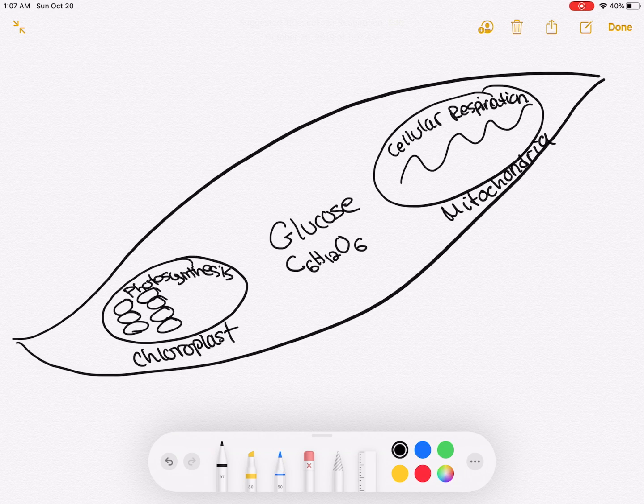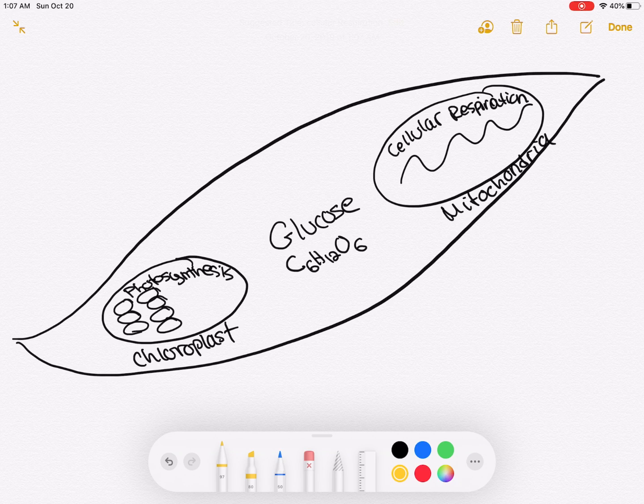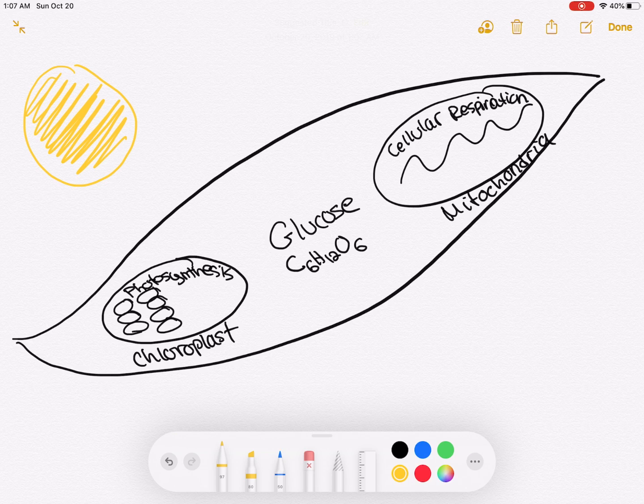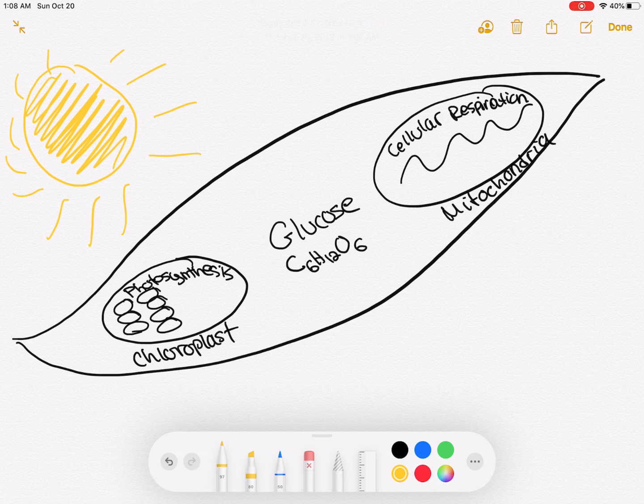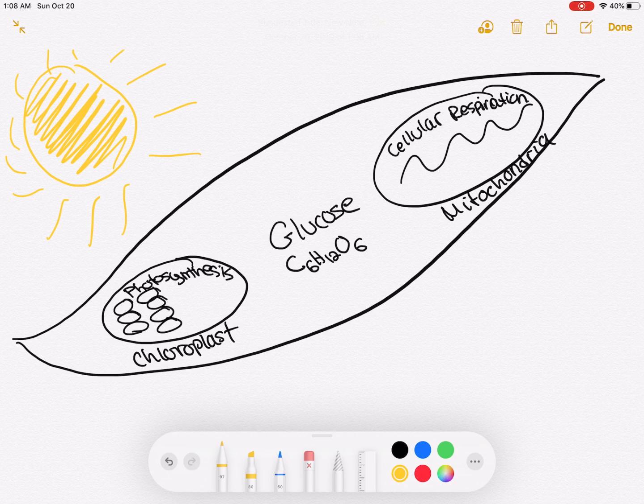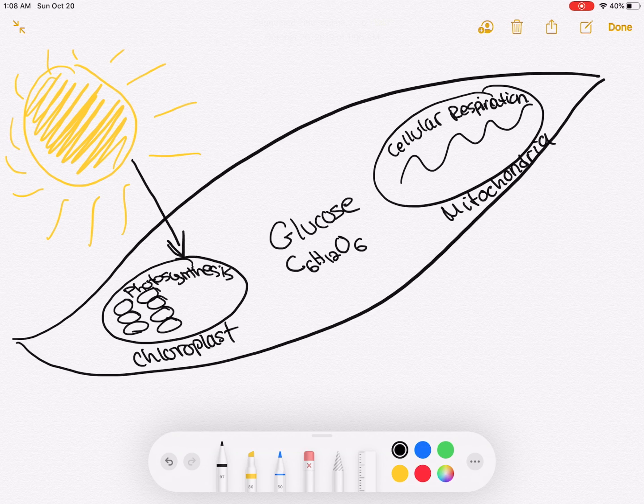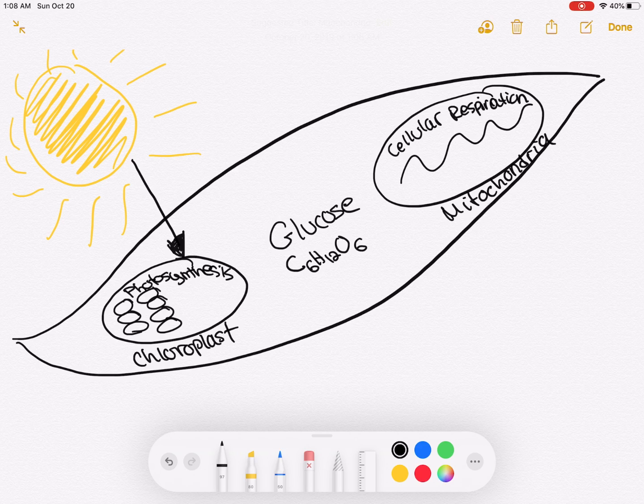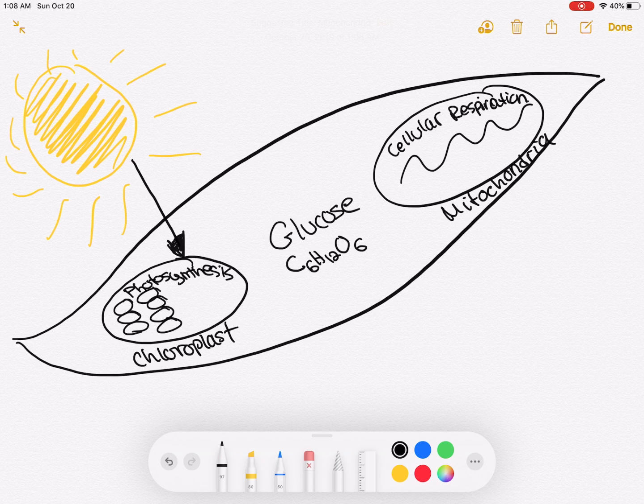The next thing that the directions tell me to do is to draw a sun outside of the leaf. This is my nice sun. I'm not very good at drawing but I'm making it work. And then it tells me that I need to draw an arrow from the sunlight to the chloroplast. This is basically telling me this arrow represents that I am starting with energy from the sun, that energy from the sun goes into the chloroplast because it's needed for photosynthesis.